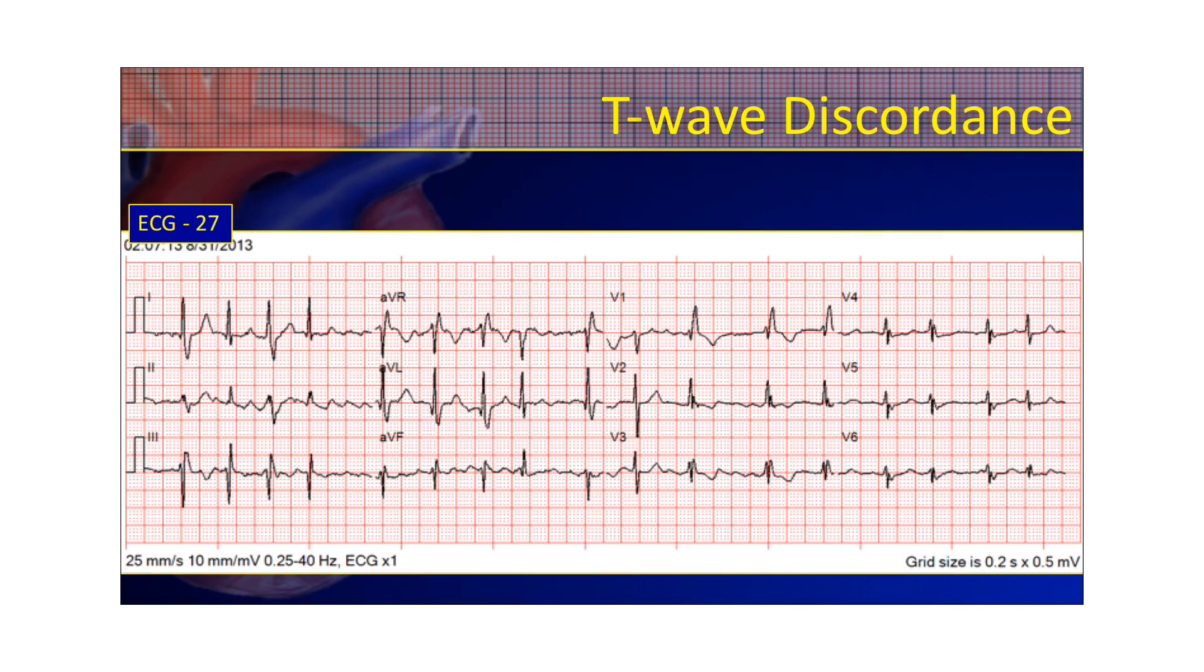Here we have a patient with a right bundle branch block. And what you see is a positive terminal wave and a negative T-wave. That is normal T-wave discordance. If that T-wave was positive with a right bundle branch block, and the ST segment was elevated, you'd probably be dealing with a myocardial infarction. That would be abnormal T-wave concordance for a bundle branch block to have concordant T-waves. It would be abnormal.